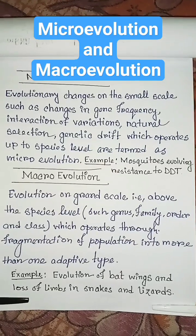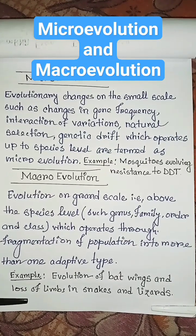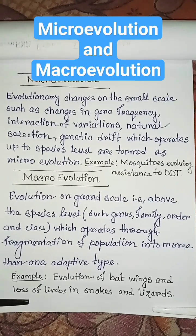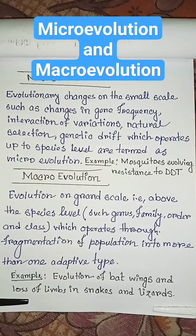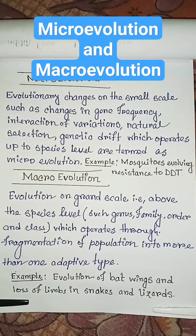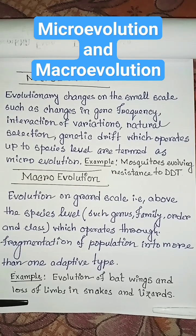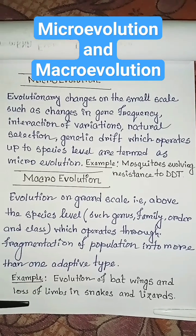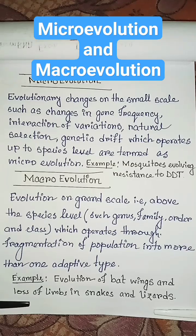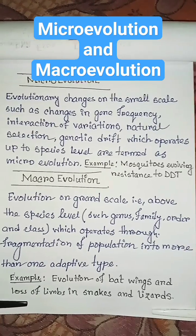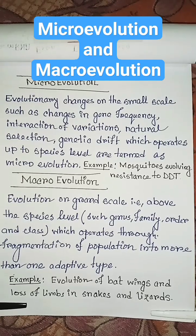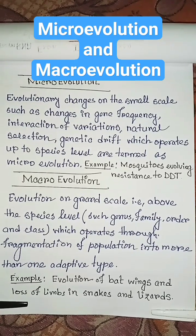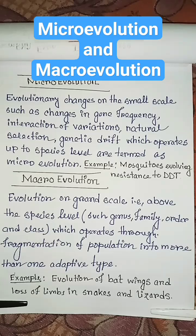What is micro evolution? Evolutionary changes on the small scale, such as changes in gene frequency, interaction of variations, natural selection, and genetic drift, which operates up to species level, are termed as micro evolution. Example: mosquitoes evolving resistance to DDT.